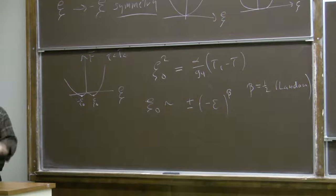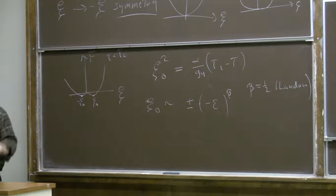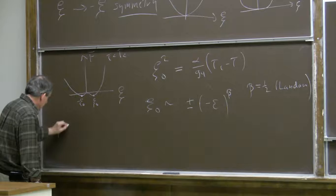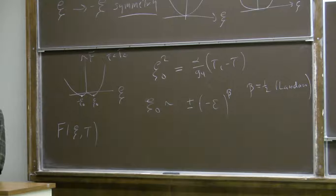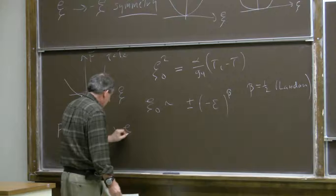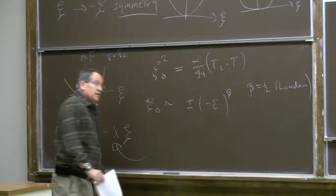We can also consider the response when we introduce some external field that couples to the order parameter. Consider modifying the Helmholtz free energy by introducing terms that break the symmetry due to some external field, like the magnetic field in the ferromagnetic model. The leading behavior will be linear in the order parameter with some coefficient — like the applied field in the magnetic model.